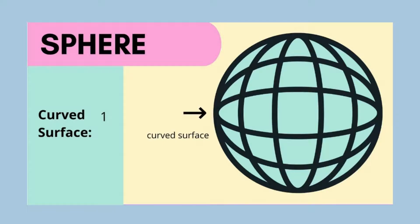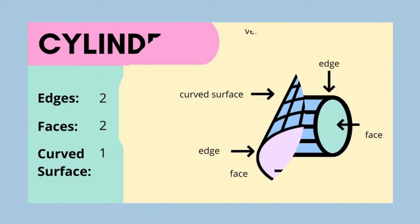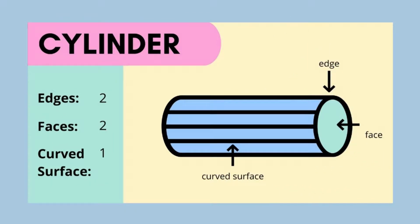It has only one curved surface, no corners, no edges. Next shape is cone. It has one edge, one vertex, one face, and one curved surface. Here is the cylinder. It has two edges, two faces, and one curved surface.